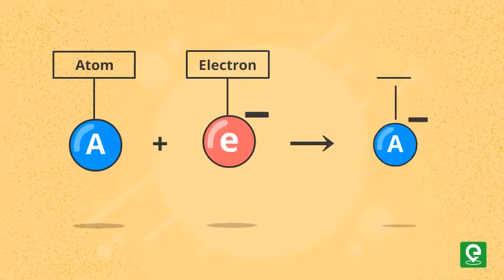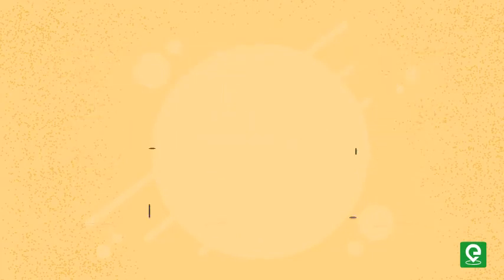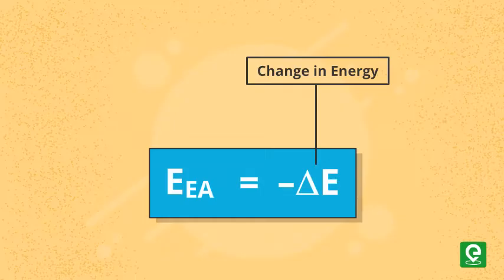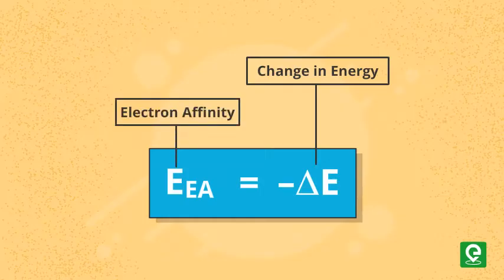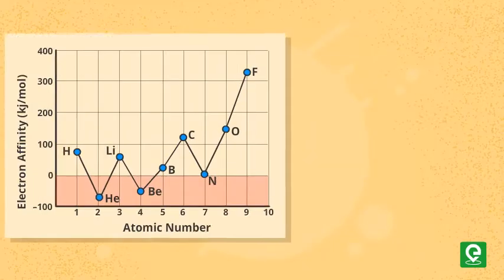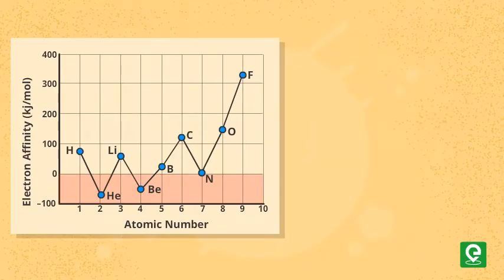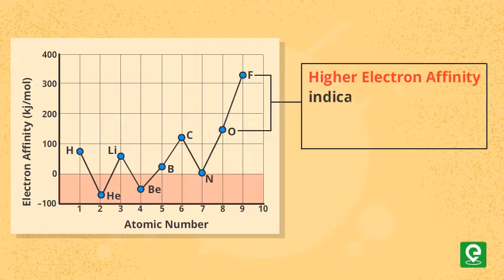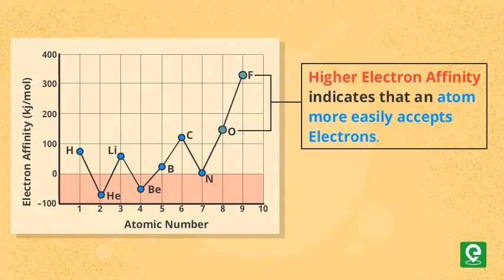Since release of energy is an exothermic process, the change in energy has a negative sign, which means that the electron affinity is positive. On the basis of this sign convention, we must remember that higher electron affinity indicates stronger capability of an atom to easily accept electrons.